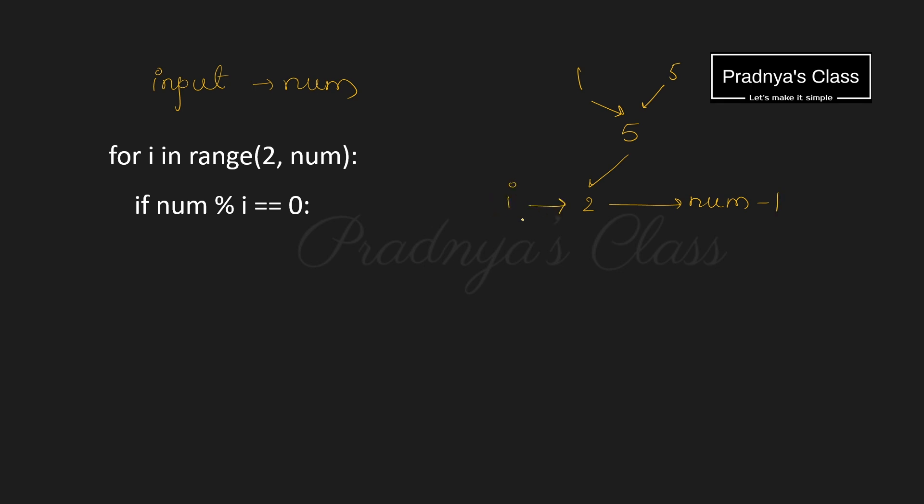Here is the variable i which will iterate from 2 to 1 less than that number. In the next step we need to check if we divide this number by each value of i and it is completely divisible or not. For that we will use modulo operator.